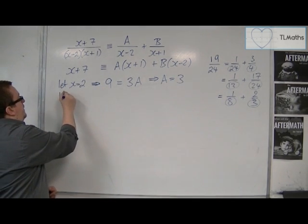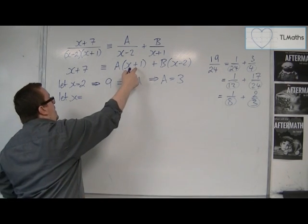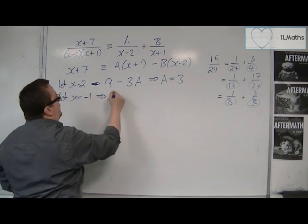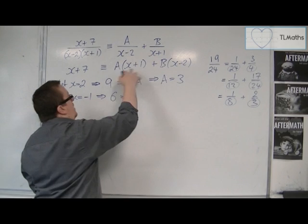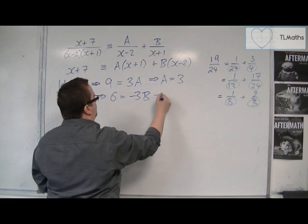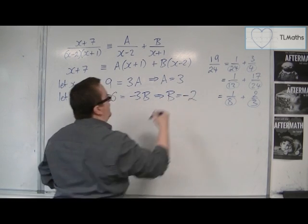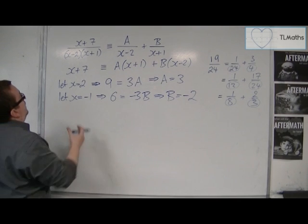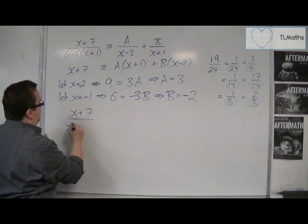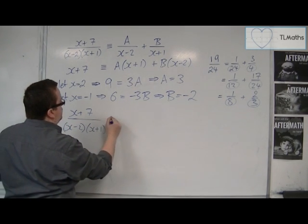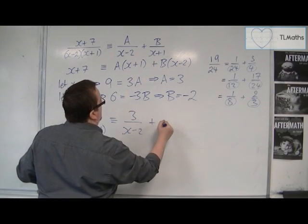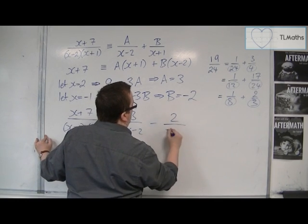Because this is equivalent, because that means that this side is precisely the same as the right-hand side, then that means it must work for all x's. Both sides must be the same for all values of x in order for that to be equivalent. So that allows me to now substitute values of x in to simplify the problem. So I could substitute in, I could let x be equal to 2, and I'm going to get 2 plus 7 on the left-hand side, and that's going to be the same as A lots of 2 plus 1 on the right-hand side, so that's 3A. And of course, when I put 2 in there, the bracket becomes 0, and so I have B times 0, so I don't need to worry about it. And that's why I chose 2. I chose 2 to cancel out one of the brackets. So that allows me to then say that A would have to be 3.